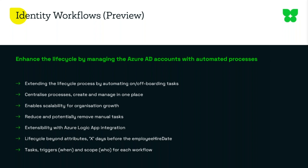There's also lifecycle beyond just attributes — a trigger can take place a set number of days before an employee's hire date so access can be granted ahead of day one. The same applies when someone leaves, where access can be removed or tasks can take place as someone is coming to the end of their lifecycle journey. Identity workflows includes the different tasks you can create, triggers for when those tasks take place, as well as scope — so who is the actual recipient of those tasks. You can have different tasks for different roles within your business.